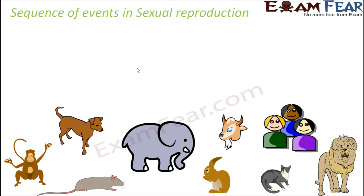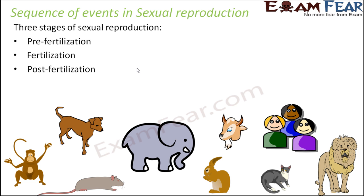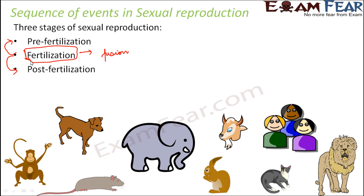In the next two lessons, we will discuss the process in more detail. Broadly, the events of sexual reproduction can be classified into three stages: first, the pre-fertilization stage; then the fertilization stage; followed by the post-fertilization stage. Fertilization is the stage where the actual fusion between male and female gametes takes place. Events before this fusion form the pre-fertilization stage, and events after fusion form the post-fertilization stage.